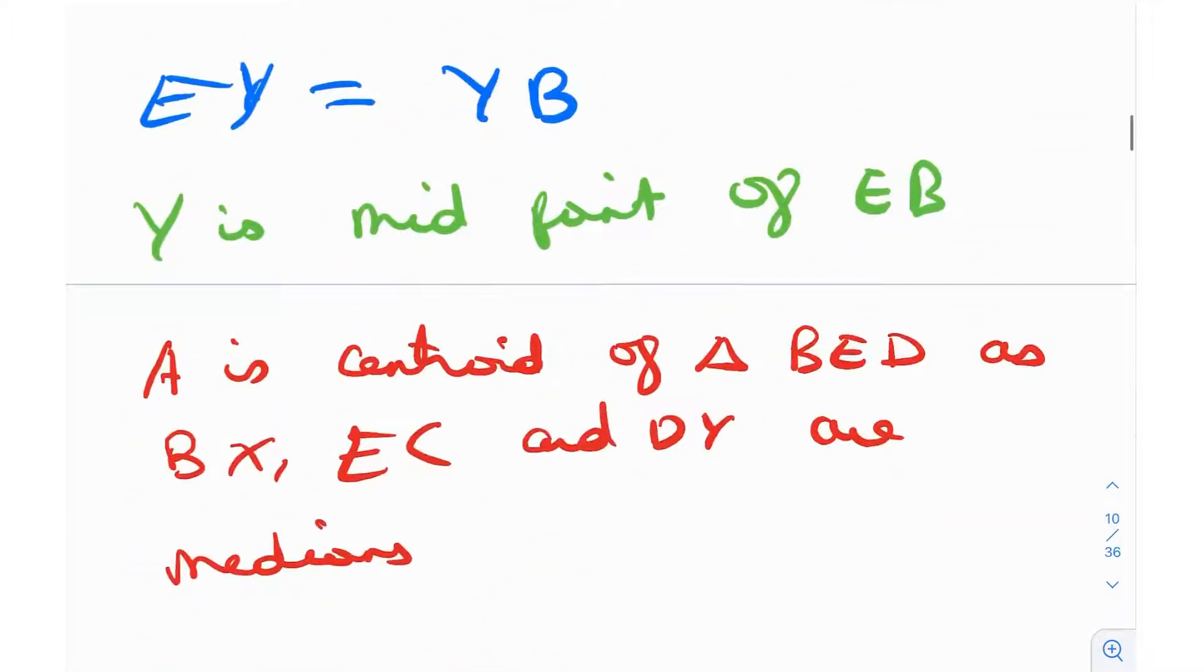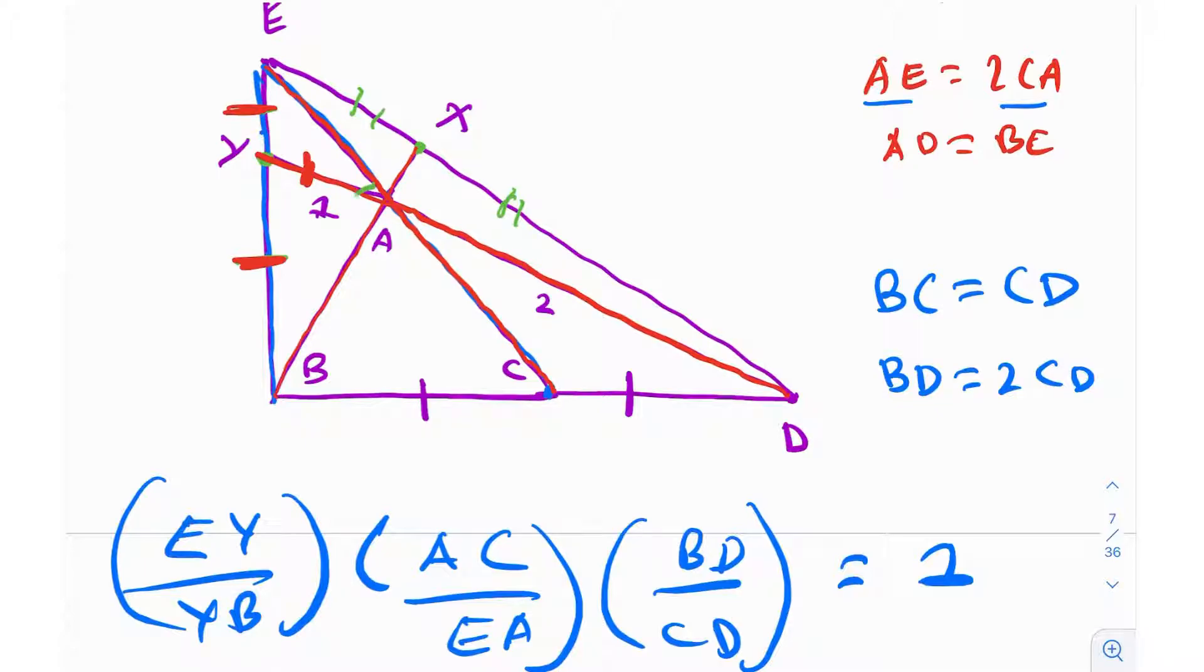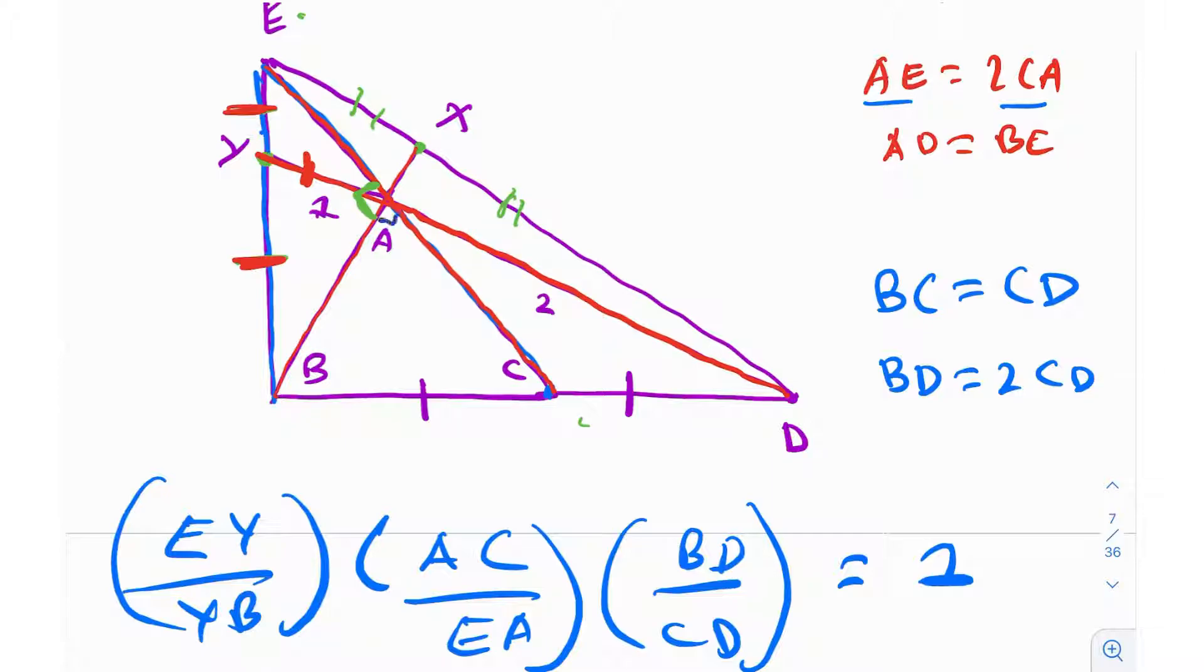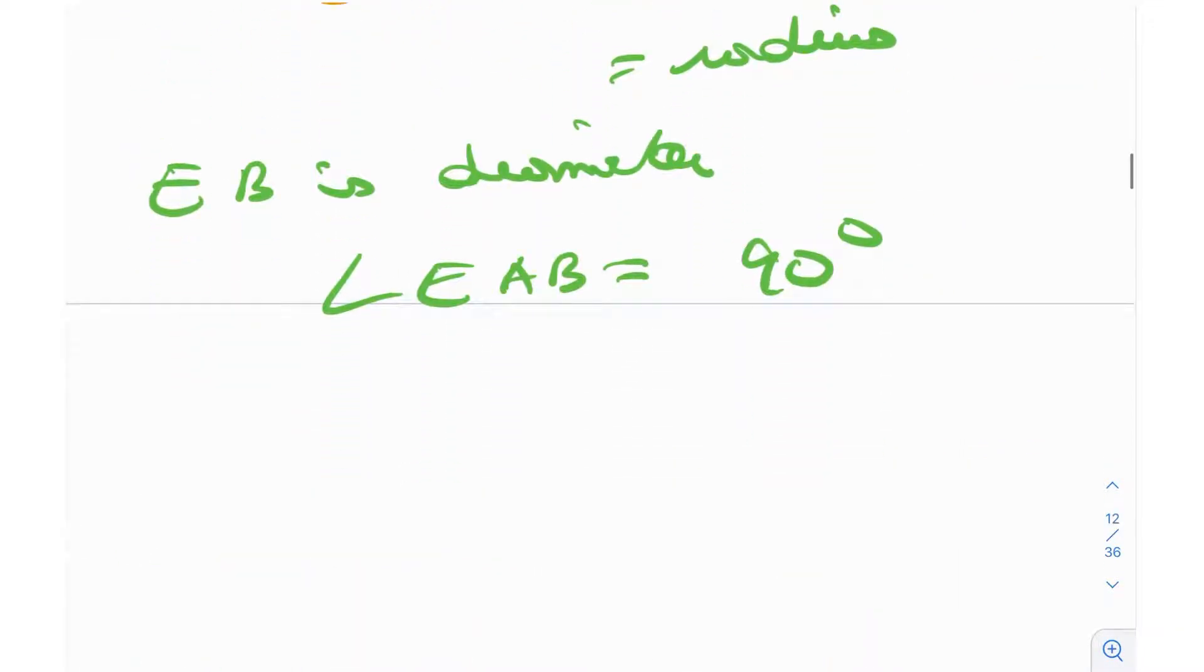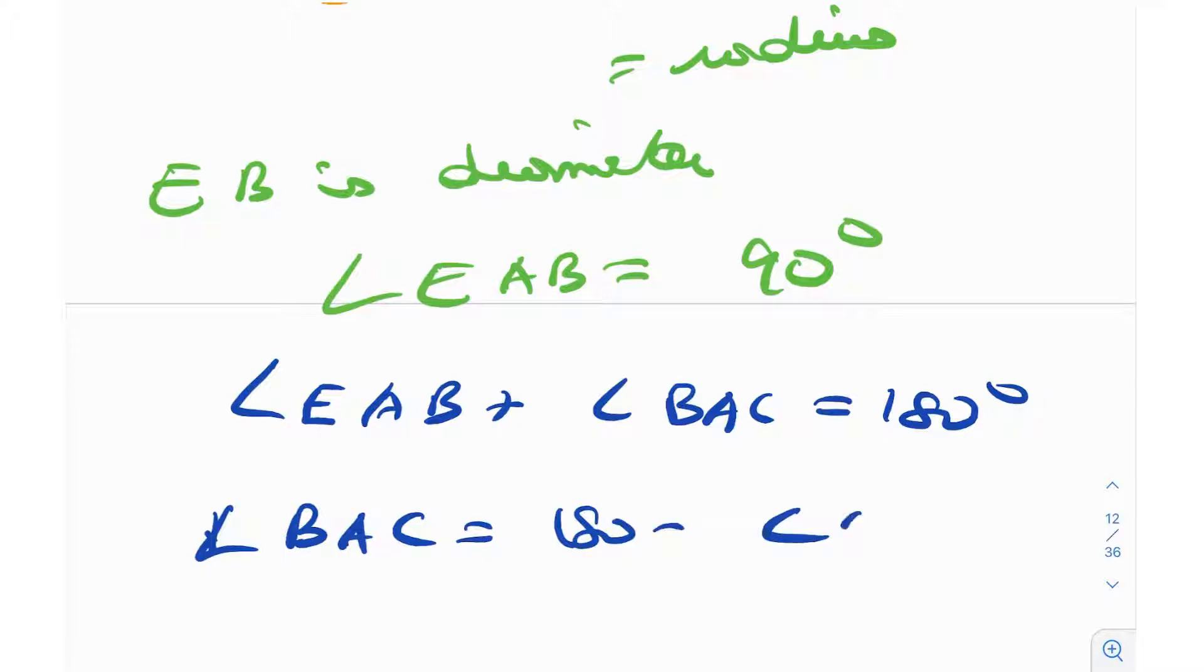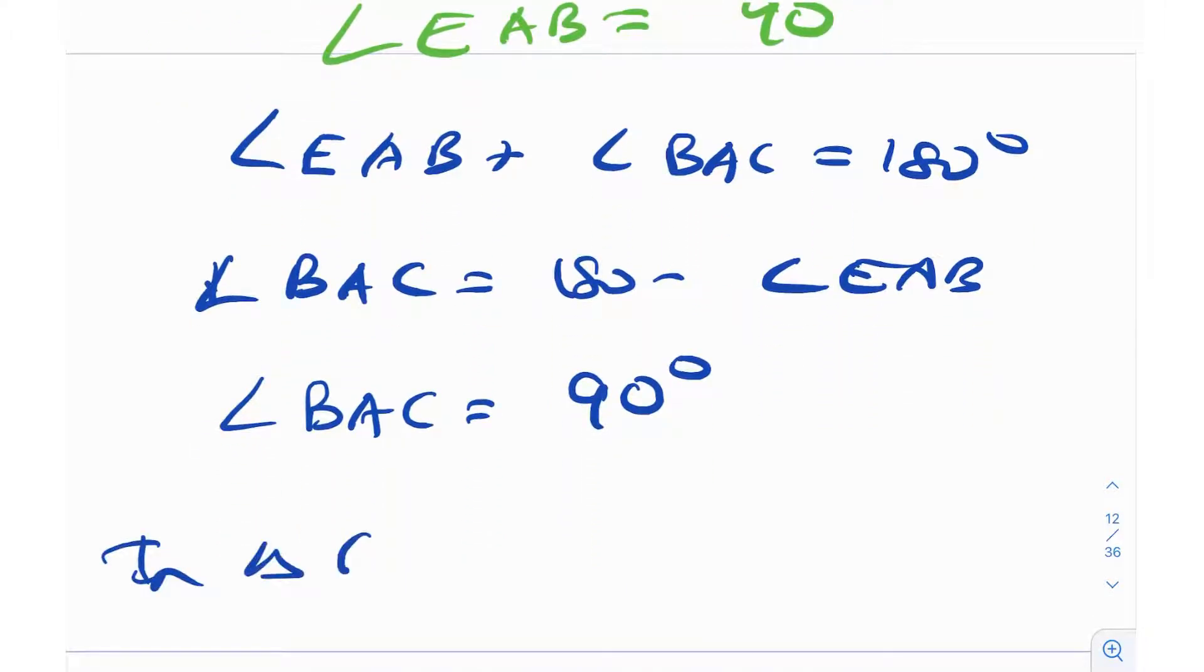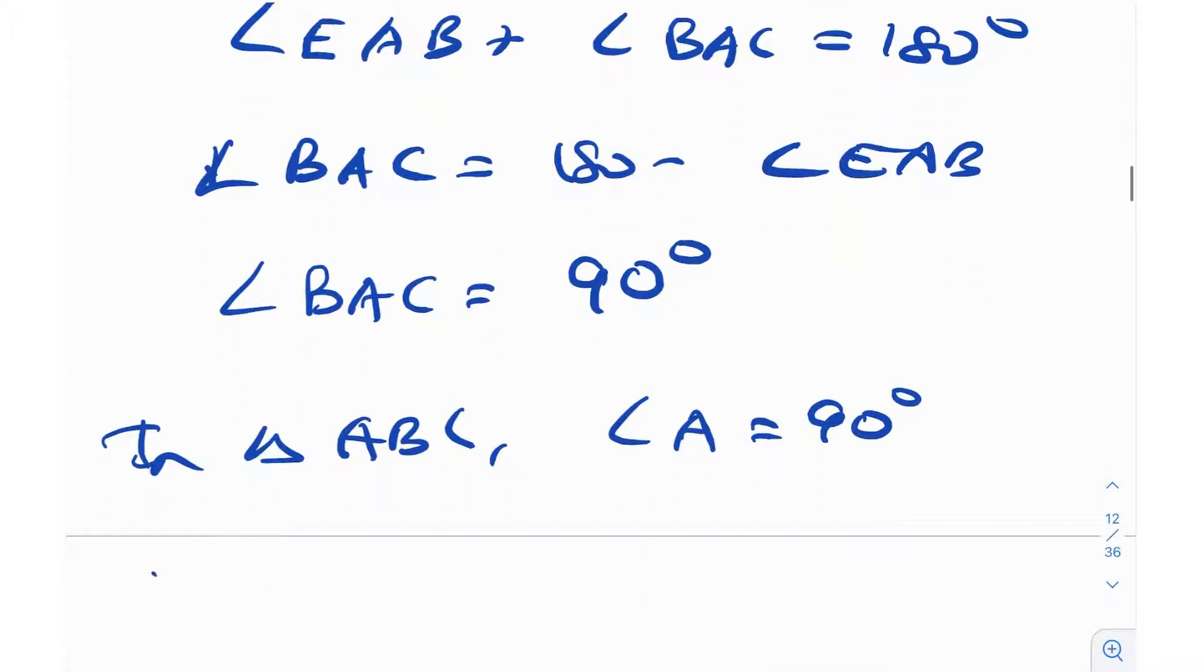One angle will be 90 degrees. So EAB is 90 degrees. Let's go back to the figure. EAB, this angle is 90 degrees. Now if this angle is 90 degrees, if you look at the line segment EC, what does that mean? That essentially means that this angle will also be 90 degrees. Linear pair: angles on a given line are always 180 degrees. Or if I just want to write this, angle EAB plus angle BAC is equal to 180 degrees, sum of angles in a line. So angle BAC is equal to 180 minus angle EAB. EAB is 90 degrees, so angle BAC is equal to 90 degrees. Or in other words, in triangle ABC, angle A is equal to 90 degrees, therefore triangle ABC is right-angled.